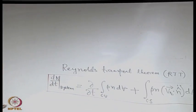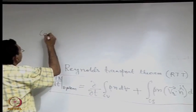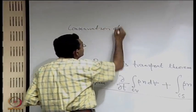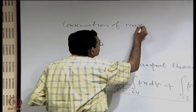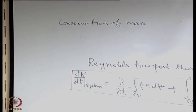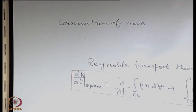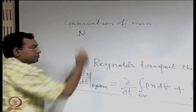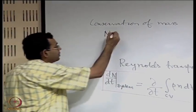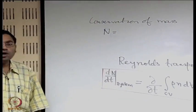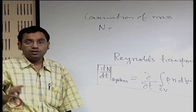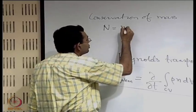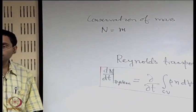When we talk about the conservation of mass, what should N be? N is what? What is the property that we are conserving here? The total mass of the system. So N is equal to m, which is the mass of the system.